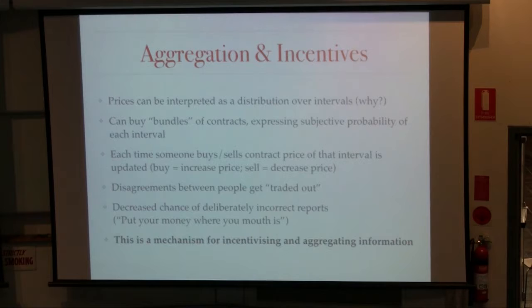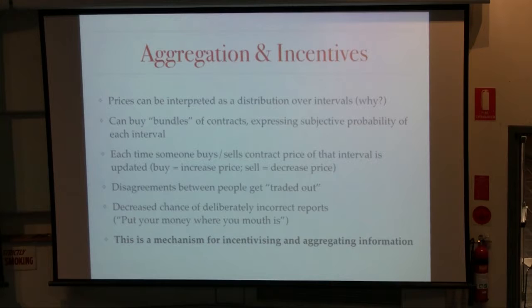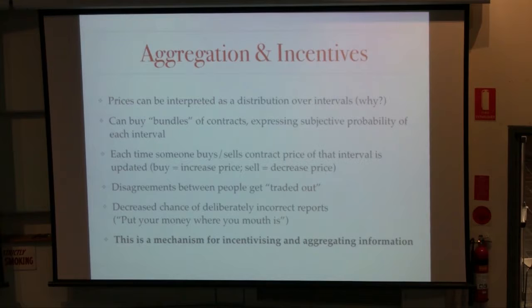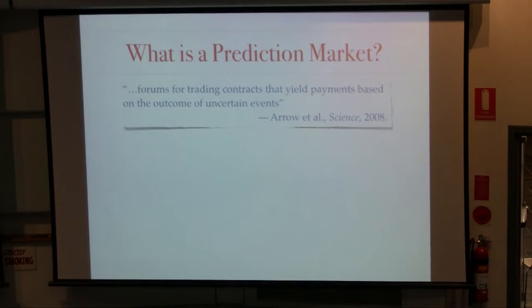Overall, this idea of buying and selling contracts contingent on some uncertain future event is a mechanism that incentivizes people to reveal their beliefs in a truthful fashion, and by opening the market to lots of people, aggregates diverse beliefs into a single price. We're going to be talking about prediction markets. Arrow and a number of other economists had a nice survey article in Science in about 2008, describing a prediction market as a forum for trading contracts that yield payments based on the outcome of uncertain events.